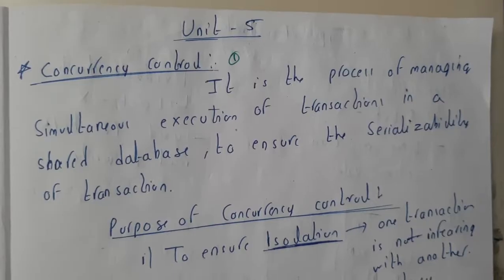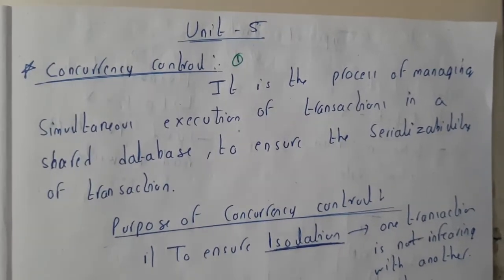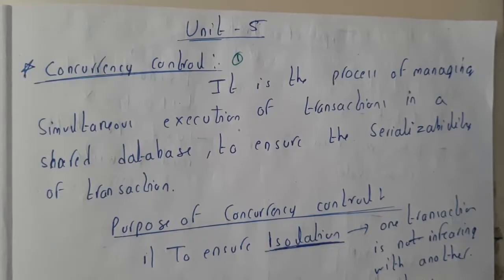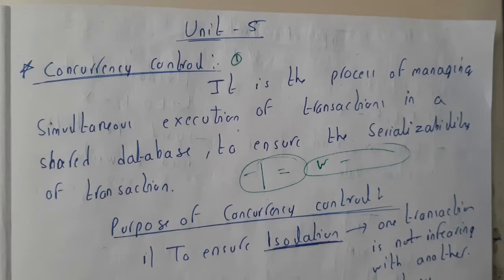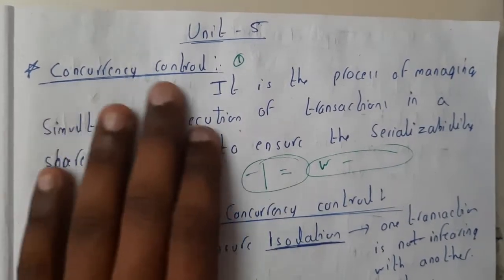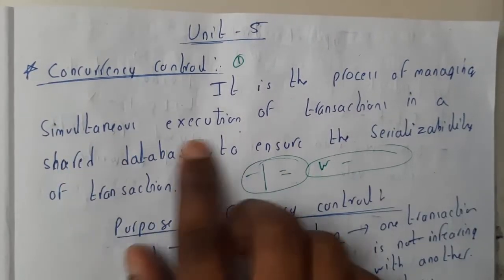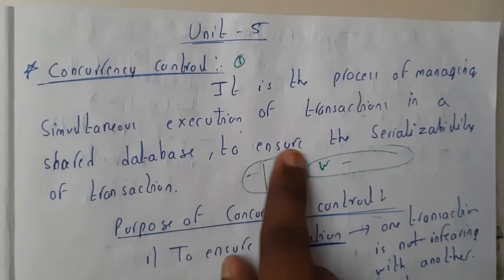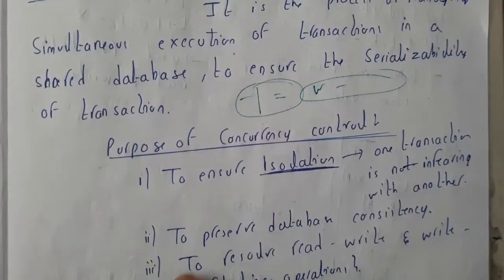We are back with our next tutorial in this series. We are going to start the fifth unit, continuing the topics from the previous series — that is, continuing about transactions and concurrency control. Concurrency control is a process of managing simultaneous executions of transactions in a shared database to ensure the serializability of a transaction.